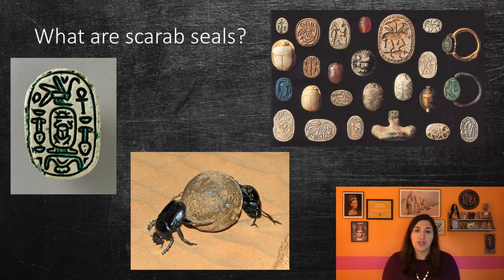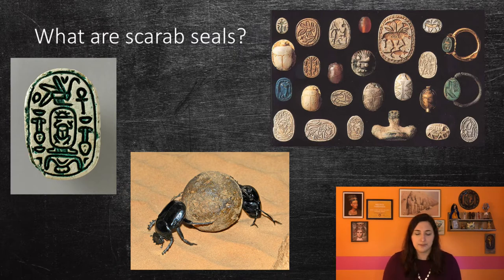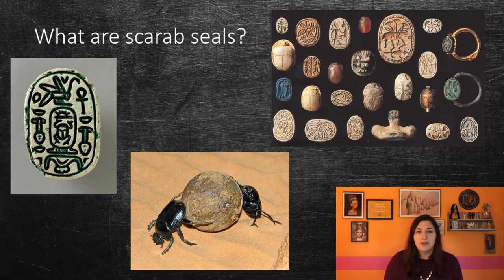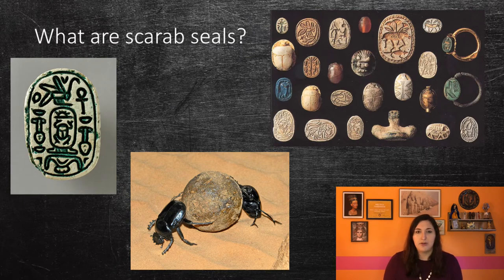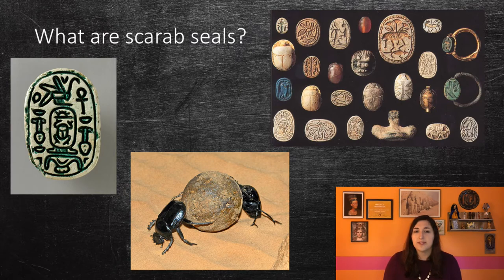I want to cover some of the most important historical documents from this time period. These were known as Scarab Seals. They became popular in the Middle Kingdom and were used throughout the rest of pharaonic history. In the ancient Egyptian religion, the sun god Ra was associated with a scarab beetle, as he would roll across the sky each day, like a beetle rolls a dung ball. These amulets depict the beetle with a flat base that is usually decorated with either geometric patterns or hieroglyphs. Those with hieroglyphs usually contain the cartouche of a king, and are known as Scarab Seals or Scarab Seal Impressions.